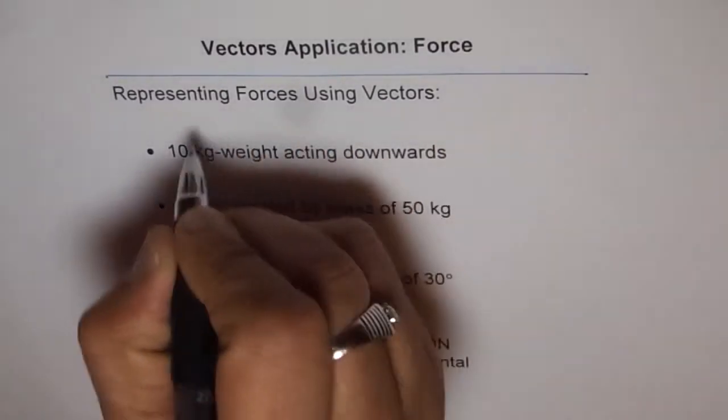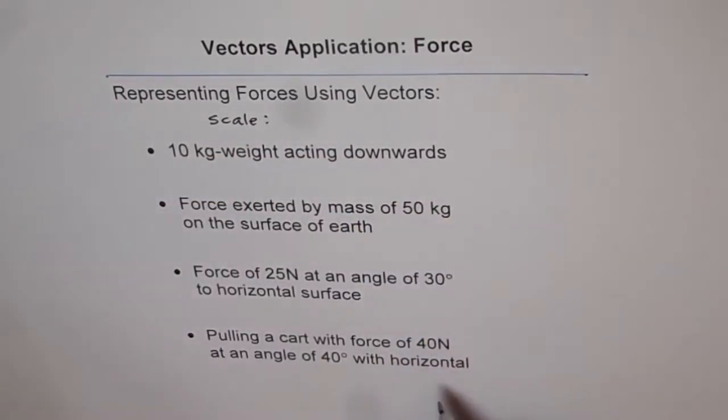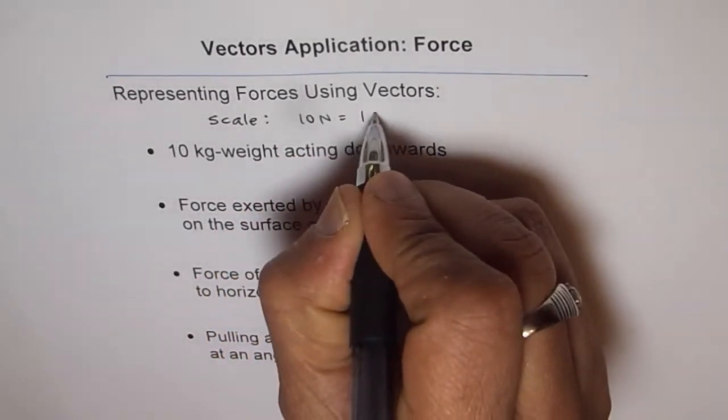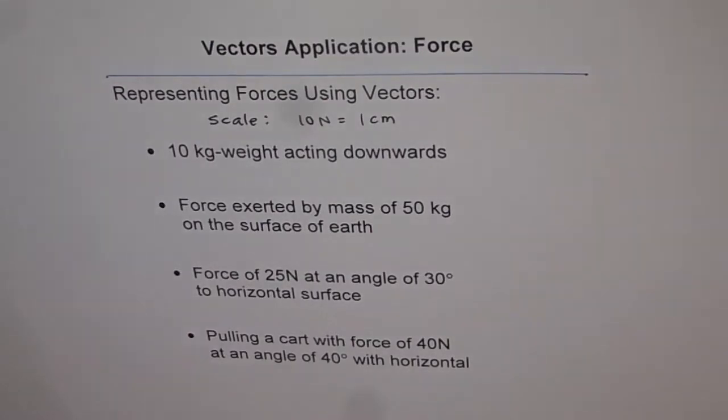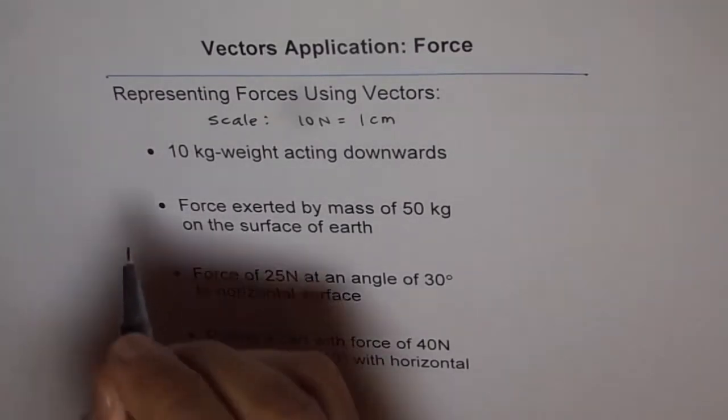Let's define the scale. In this case we are seeing most of the things in Newtons. Let's say 10 Newtons equals to 1 centimeter. So once you make a scale, it is easier to draw and you will get accuracy. Now for example, the first one says 10 kg weight acting downwards.